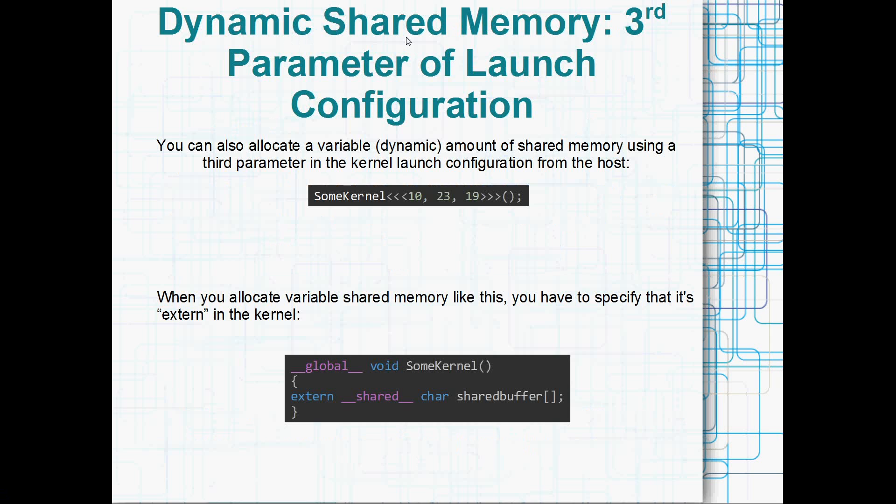Alrighty, if you're not happy with static shared memory, you can also change the amount of shared memory, but you've got to do it on the host side. Yeah, it's a little bit strange, but the third parameter of the launch configuration is actually the amount of shared memory. Pretty weird. So on the host side, when you call a kernel, you can actually supply a third argument. So we've got 10, 23 and 19 here as the kernel launch parameters. And that 10 just there is the number of blocks, the 23 is the number of threads per block, and the 19 just here is the amount of shared memory to allocate per block in bytes.